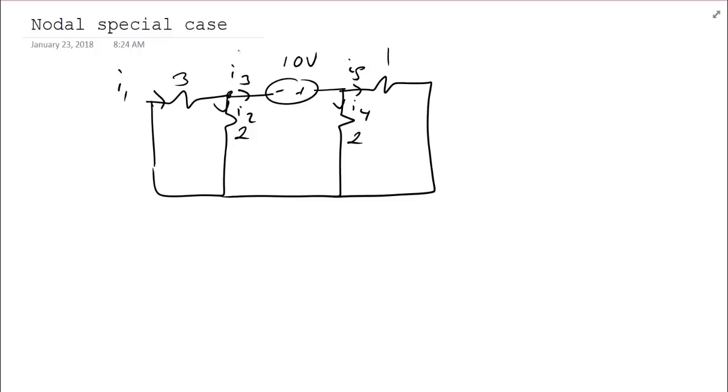The first step is to choose a reference. Normally, I will choose the one at the bottom, unless there's a reason not to. This will be known as VA. And here, we'll have VB. So far, nothing has changed. This is essentially the same as we had to do before. What you're going to notice, though, is that this voltage source is about to cause us some problems.